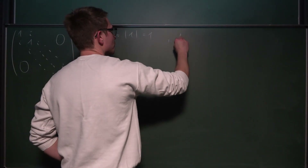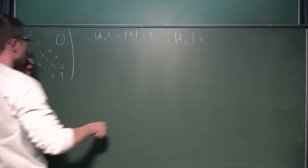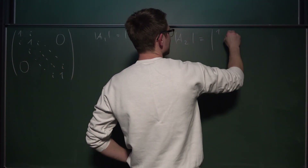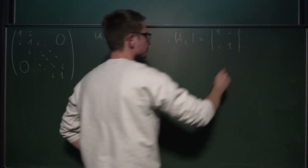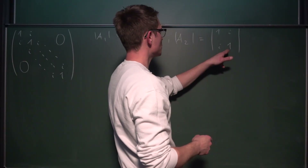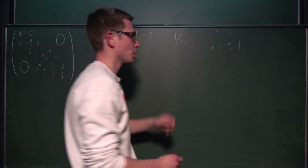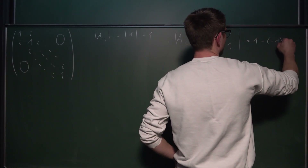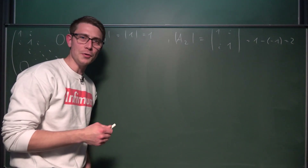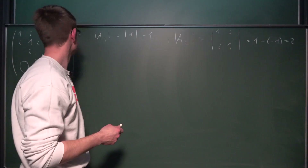Now what is A2? The determinant of A2 is this matrix where we have 1 and 1, i and i. This gives us 1 squared minus i squared, which is 1 minus negative 1, so 1 plus 1 equals 2. Oh, is this a generating matrix for natural numbers? 1, 2...